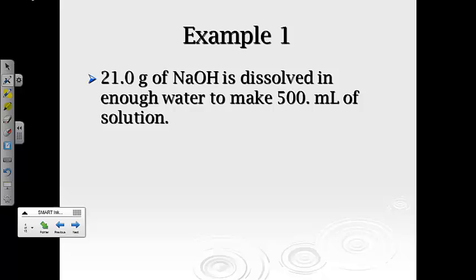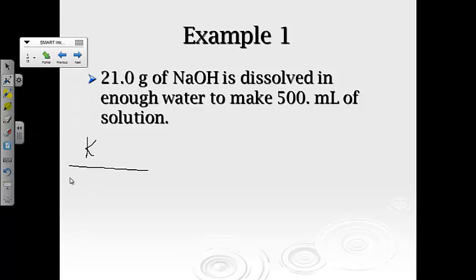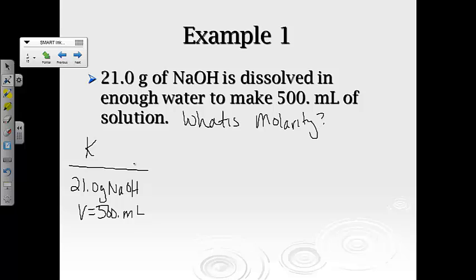All right, so let's jump right to some samples here. If we have 21 grams of sodium hydroxide is dissolved in enough water to make 500 mils of solution, how much are we going to have? So let's see if we can get this to work. First of all, let's go ahead and list out our known information. They're telling me that I have 21.0 grams of sodium hydroxide. We want to make, our volume is going to be 500 mils. What we are trying to figure out is what is the molarity.